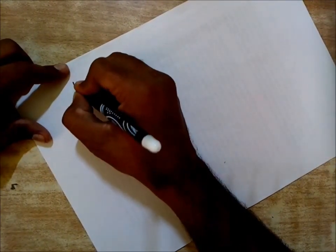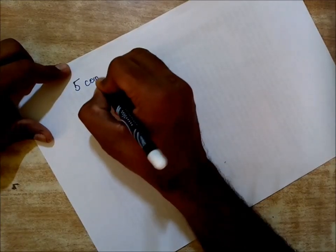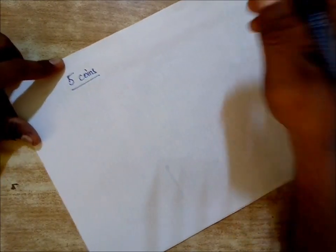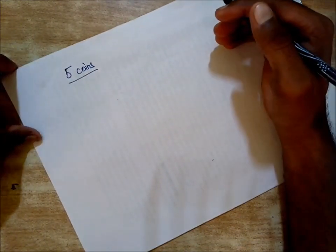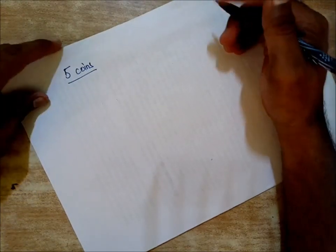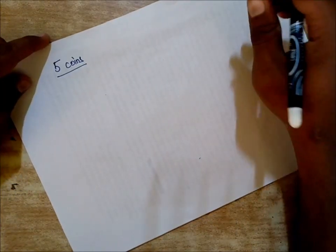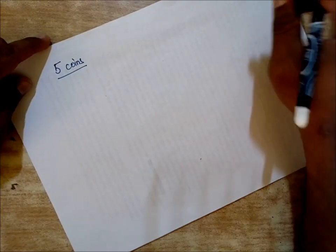So guys, let's start solving our problem. We have been given five coins, so we will be building Pascal's triangle up to the fifth row. Remember, the first row of Pascal's triangle is considered as row zero. Let's begin.